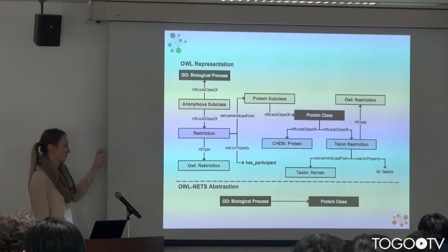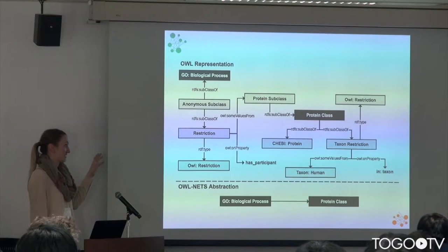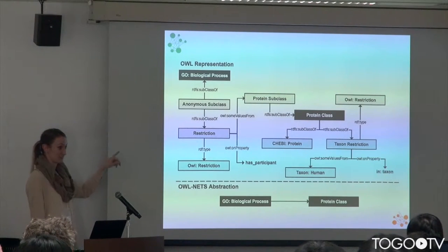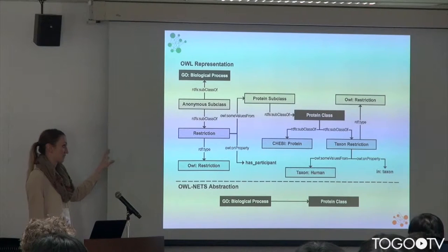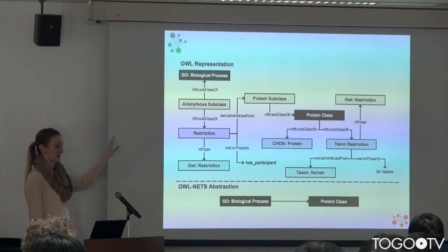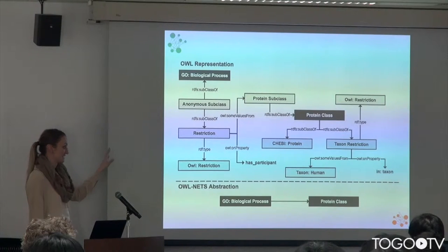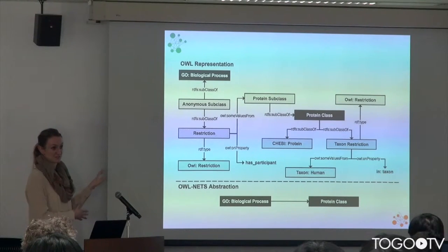So the human proteins that participate in that process — whereas these gray boxes here are what we're calling intermediary nodes for OWL that are needed to model this kind of representation. The method takes all of those gray nodes and essentially abstracts them out and just leaves you with the biology of that query.